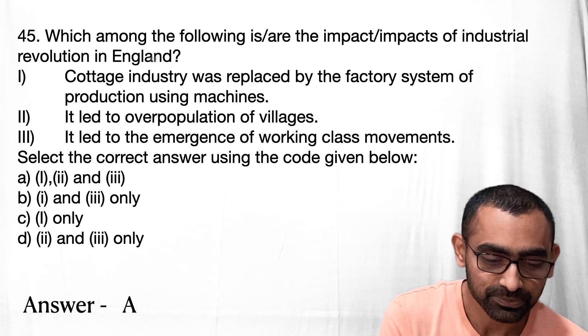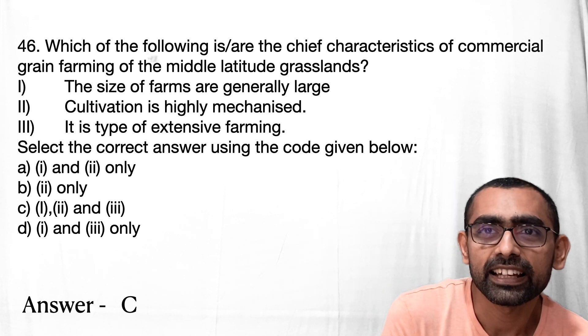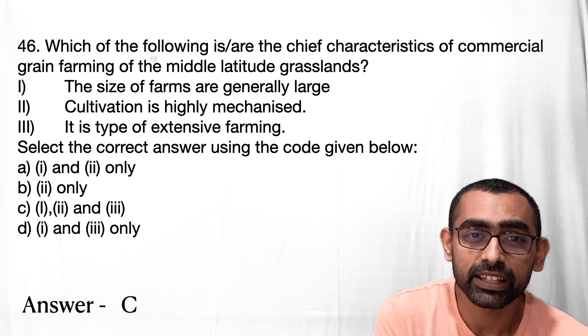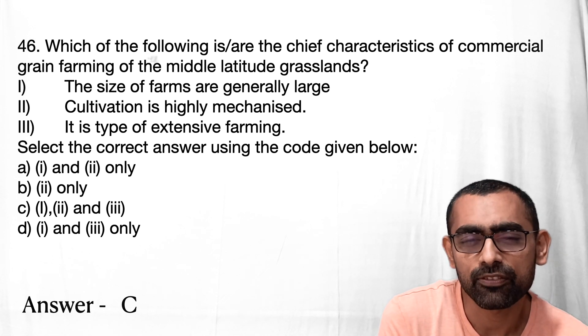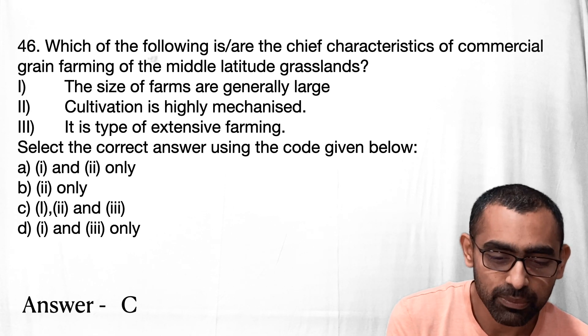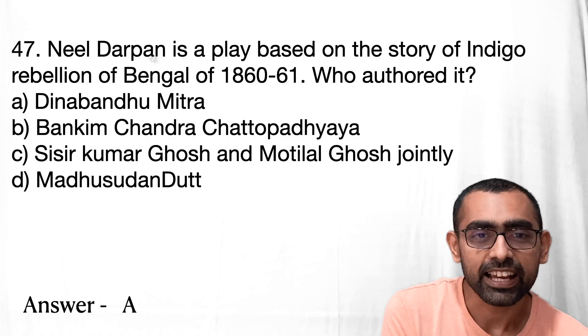Question 46 is about the characteristics of commercial grain farming. Comparing farming in the developed and developing world, in the first world a very small portion of people farm very large areas of land. In these middle-latitude grasslands, huge land areas require fully mechanized farming using machines. It is a type of extensive farming with large crop volumes involved. All three options are correct, so the answer is C.